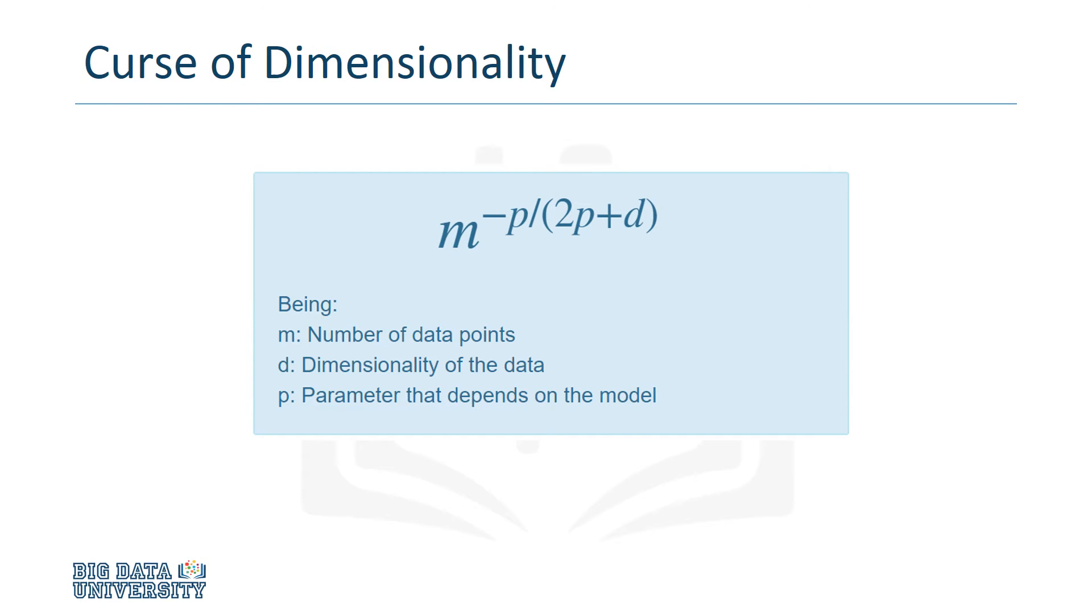According to a 1982 study by CJ Stone, the time to fit a model is, at best, the function you see here. So, as we increase the dimensionality, our time to fit the model will increase exponentially.